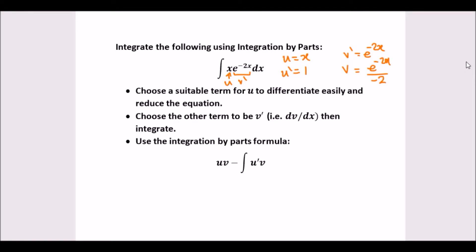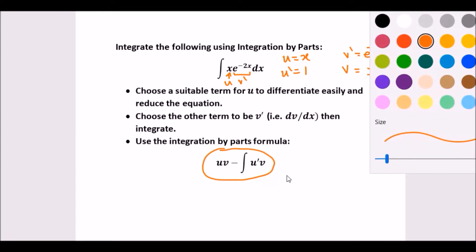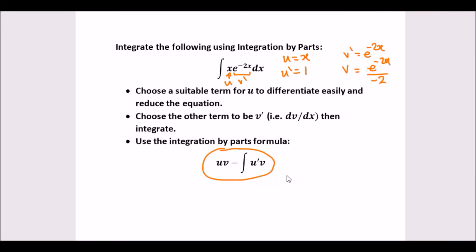It's easy, isn't it? Now we just use the formula. Using uv minus the integral of u prime v, what is that? uv is u times v, so x times this term. You can take this negative half outside, so it would be minus 1 over 2 times x times e to negative 2x. Then it will be all of this minus the integral of u prime.